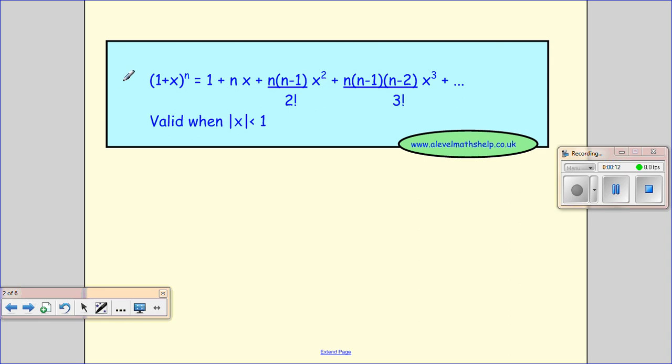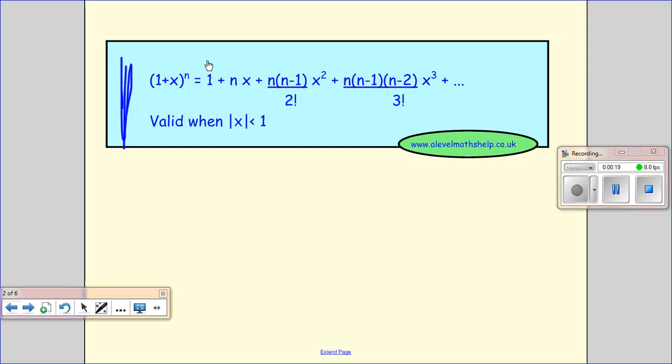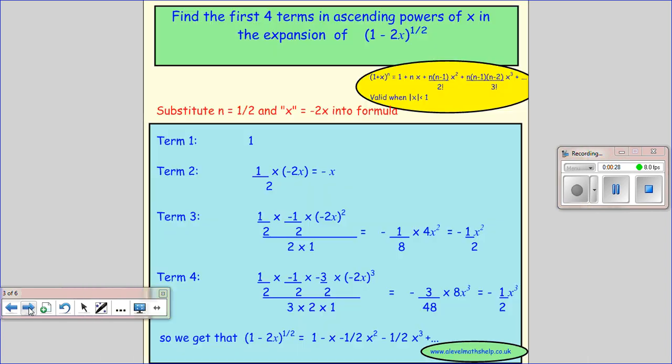Just reminding us what we had before, we had this expansion which we were able to use when n was not a whole positive number. So we could use it when n was minus 4 or when n was a half. The key to this one is it's only valid if the modulus of x is smaller than 1.